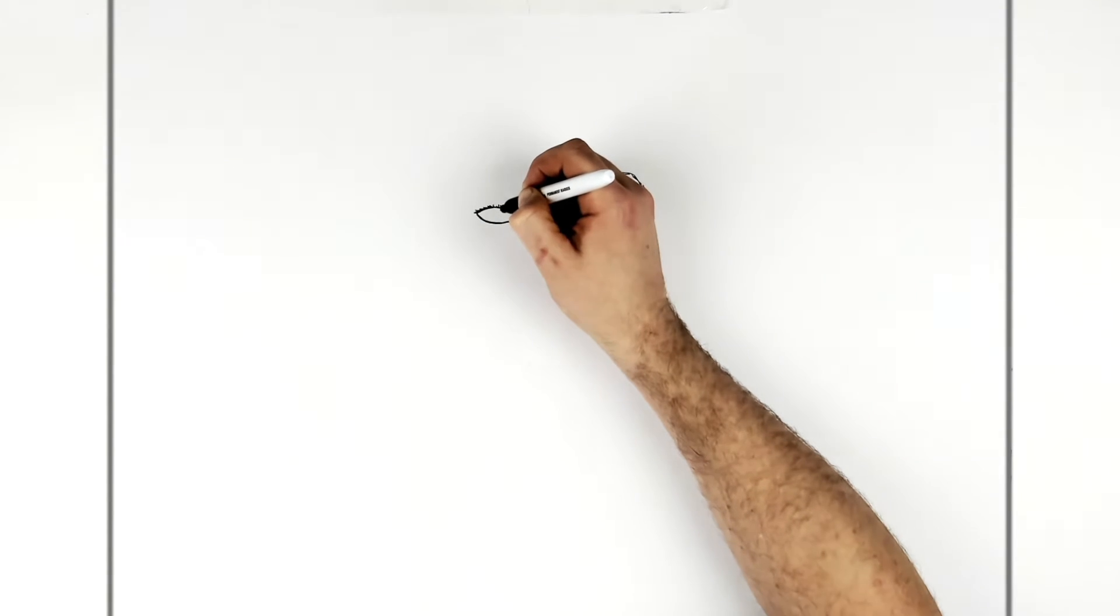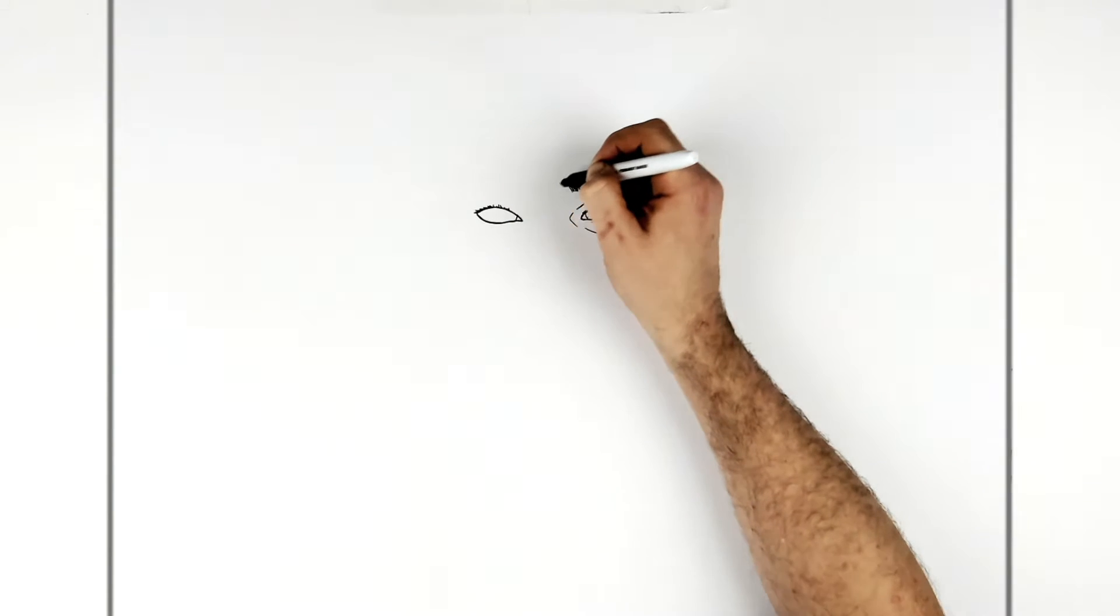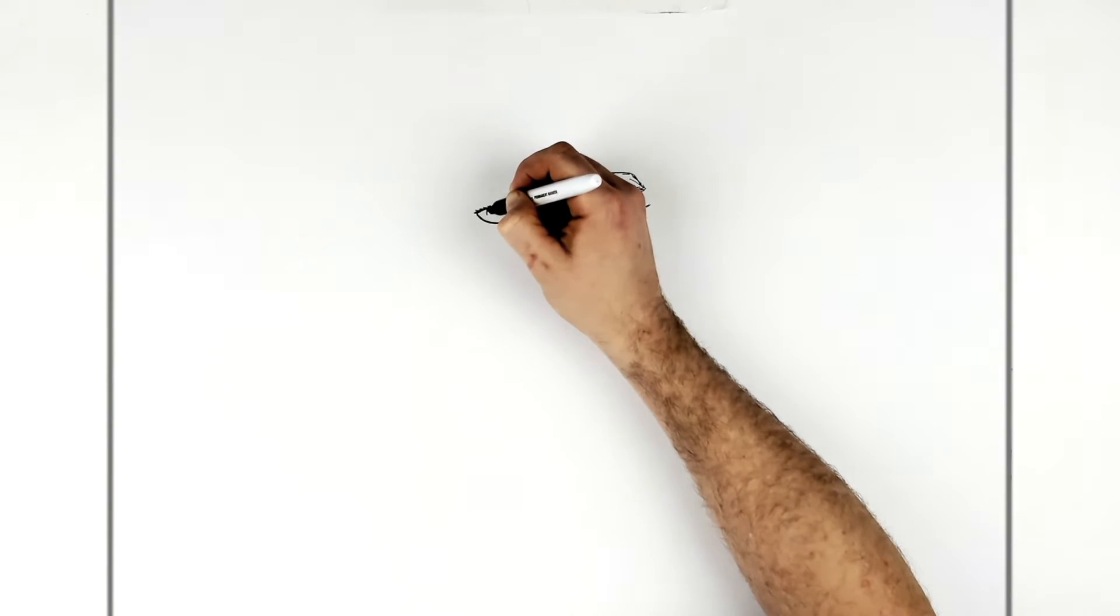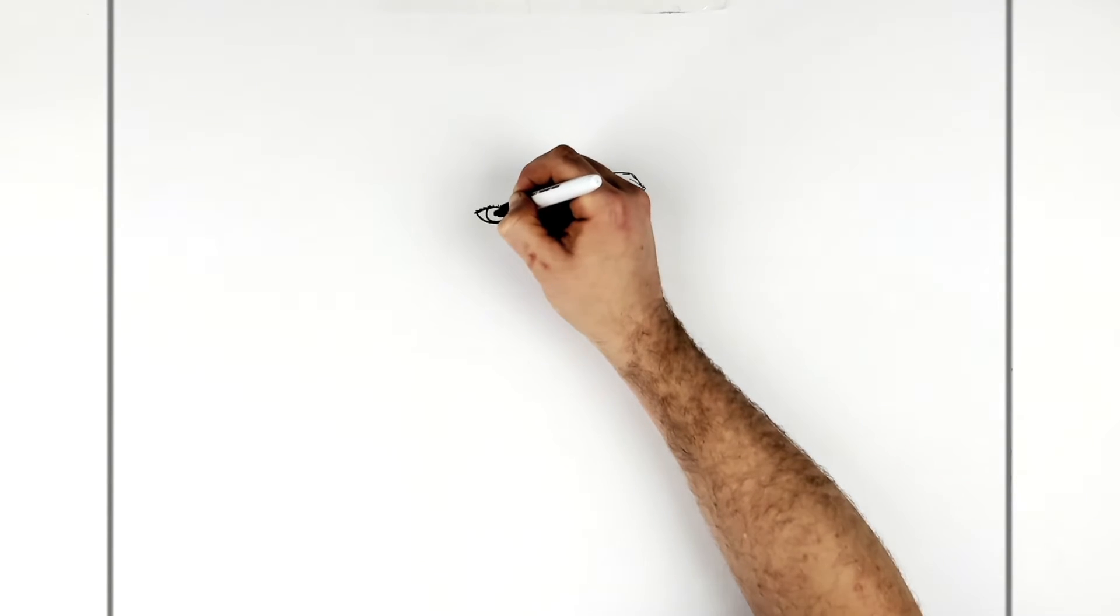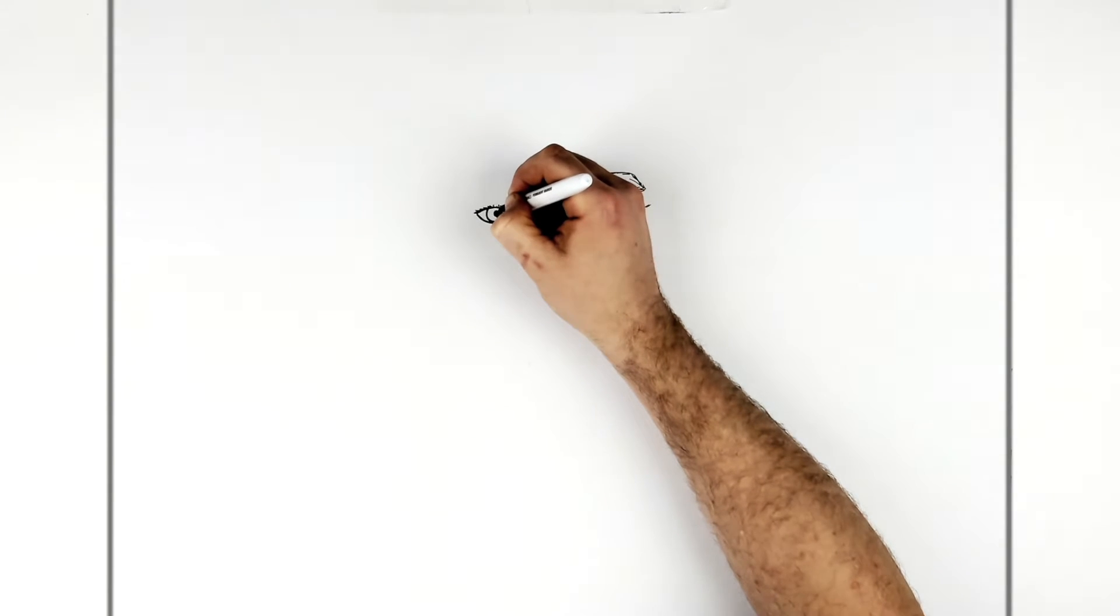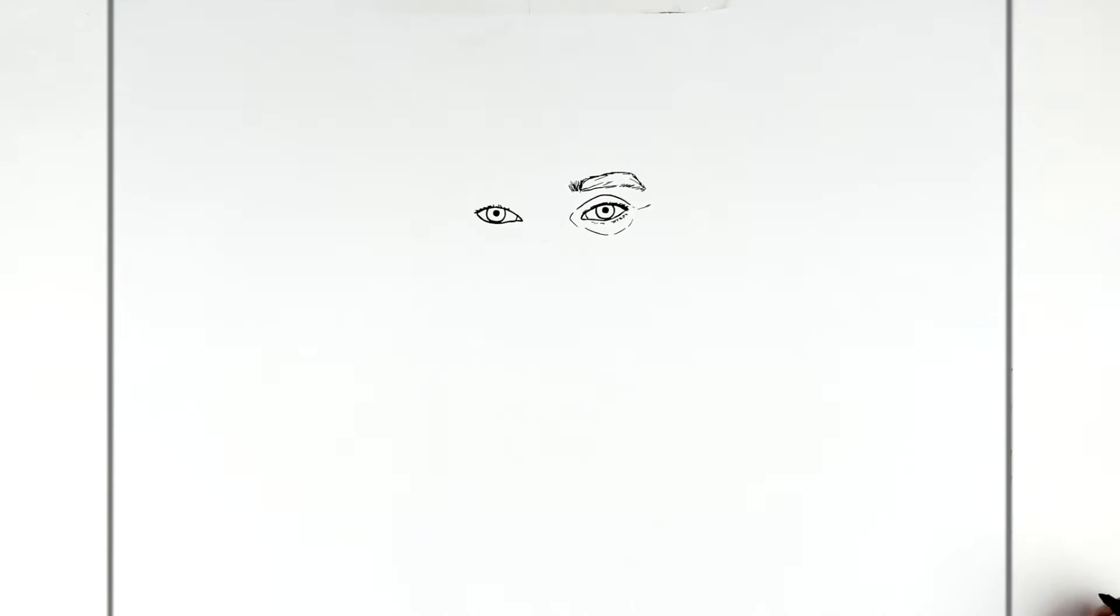Iris, just in here. So we go again, just a circle. And pupil in the middle. I'll try and get the pupils the same size, as best we can.